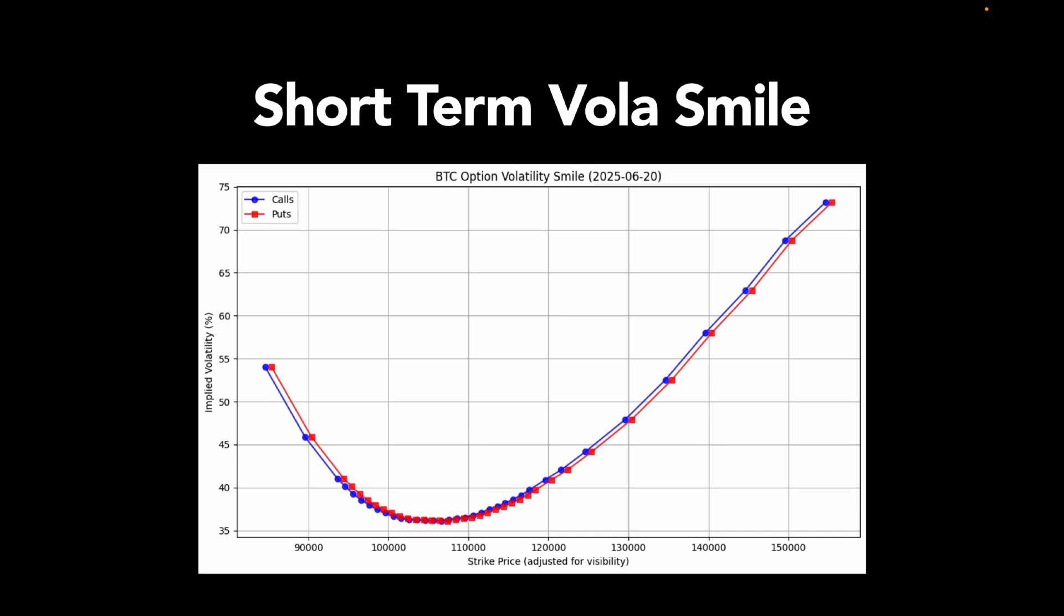All right, let's take a look at this chart. This is the implied volatility smile for Bitcoin options expiring in just two weeks. What you're seeing here is a curve that shows the implied volatility across different strike prices. So we got strike prices on the x-axis and implied volatility on the y-axis. Now, implied volatility is basically how much the market expects the price to move—not in one direction, but just how wild it might get. And what's interesting here is the shape of this curve.